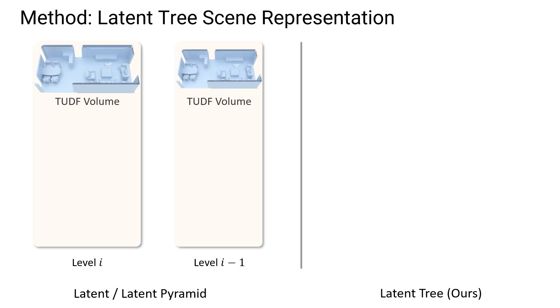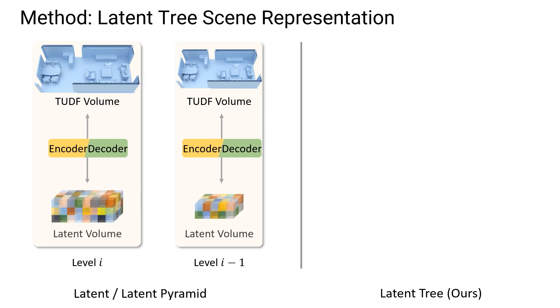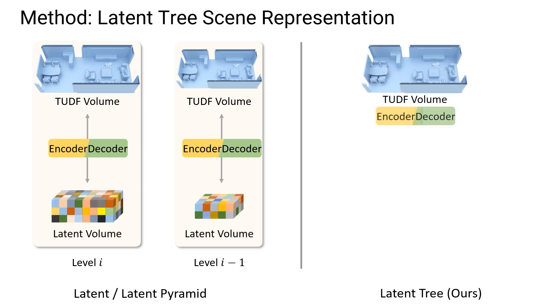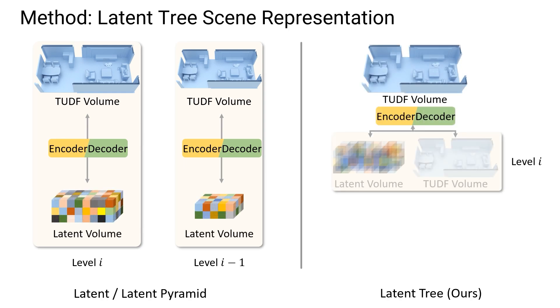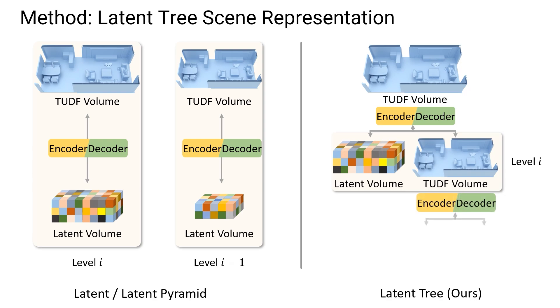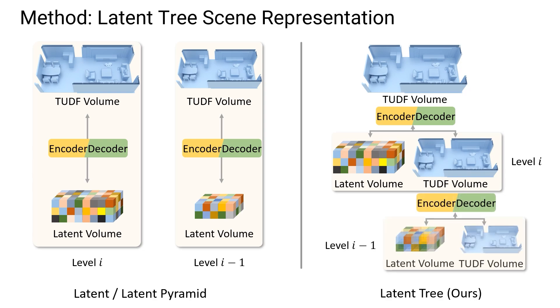In contrast to standard latent compression to a single latent grid, we model the latent 3D scene space as a coarse-to-fine tree decomposition, where each resolution level characterizes the scene as a truncated unsigned distance field as well as a latent feature volume.